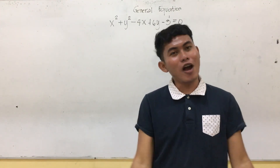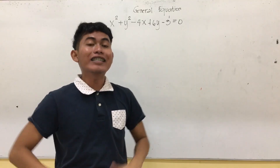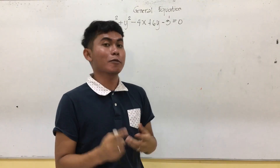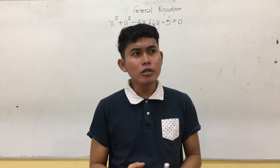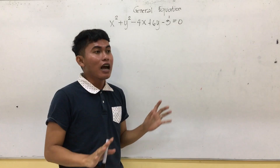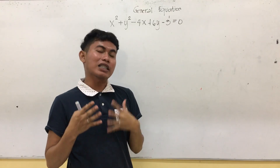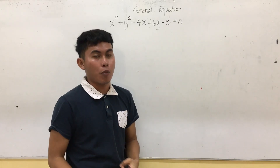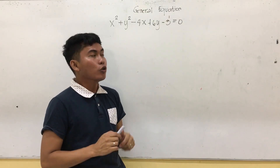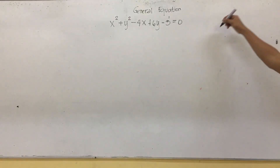For the first part of our lesson, let's have transforming general equation to standard equation of a circle. This is very important especially if we are going to graph a circle, because as you can see this one is in general form and you cannot simply graph it directly using this equation. That is why you are going to transform this one first to standard equation.